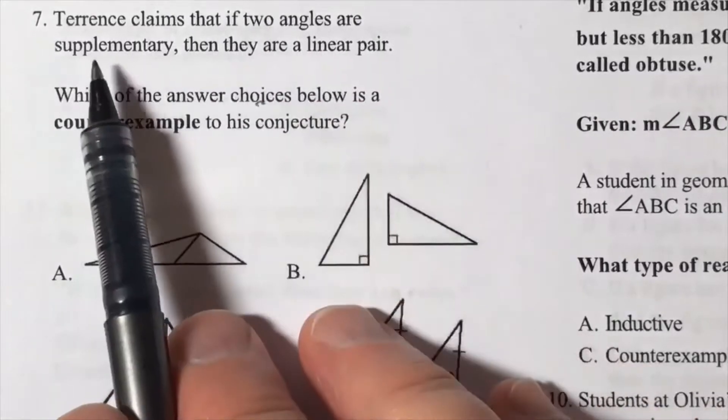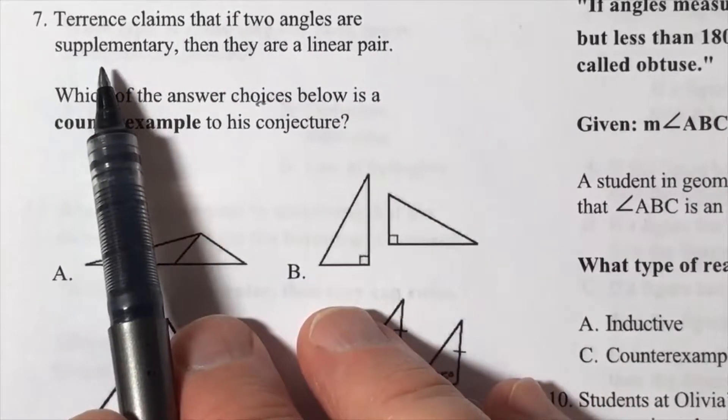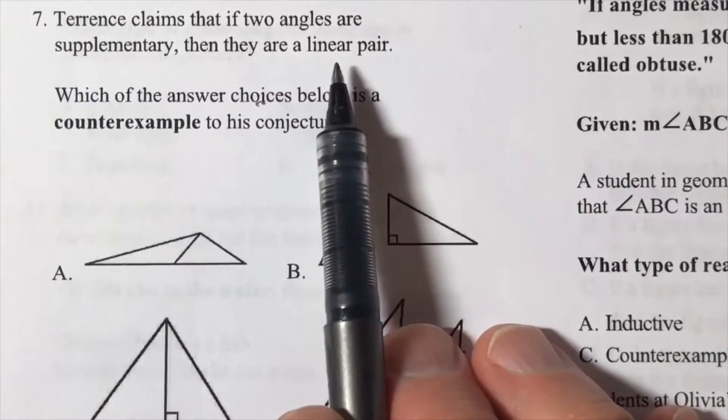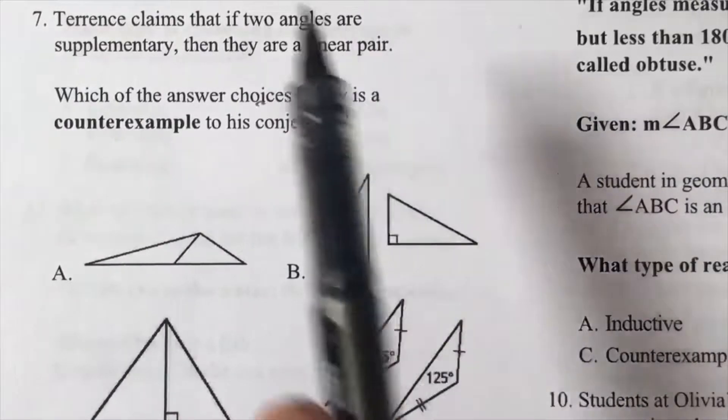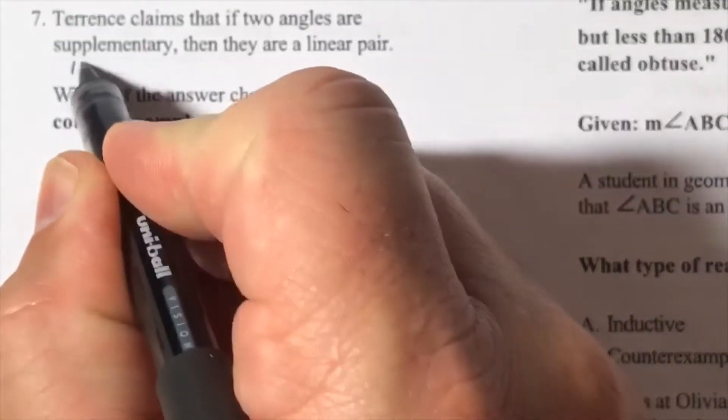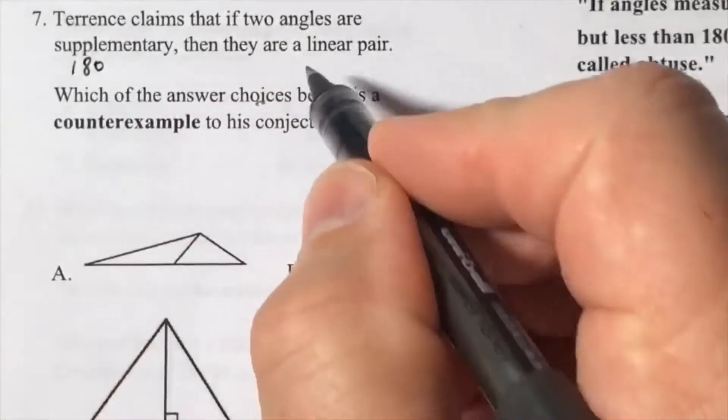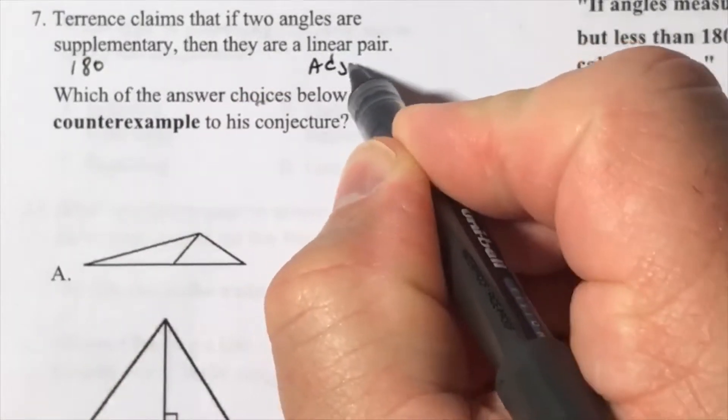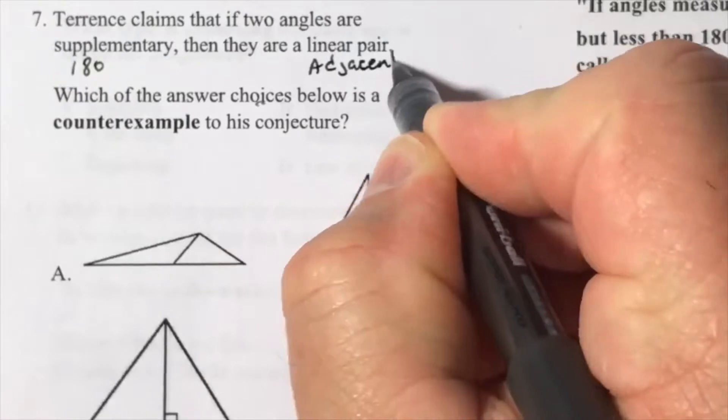Terrence claims that if two angles are supplementary, then they are a linear pair. Well, supplementary means 180, linear means adjacent and 180.